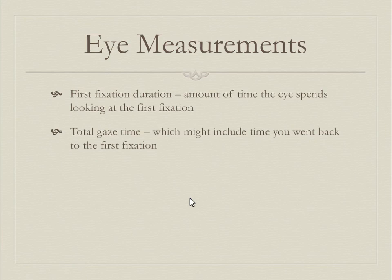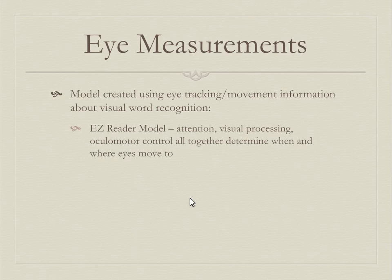Other things we can measure include first fixation duration — how long you looked the first time — which is important for predicting reading skill and other variables. We can also look at total gaze time — how long you looked at a particular word overall. Both of these are used to determine behavioral variables like reading skill and comprehension. This brings us to an early model of word recognition focusing on fixations and saccades.